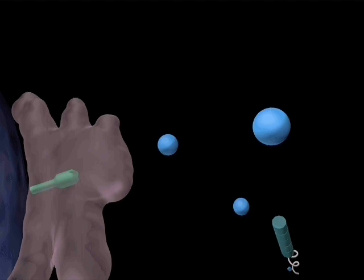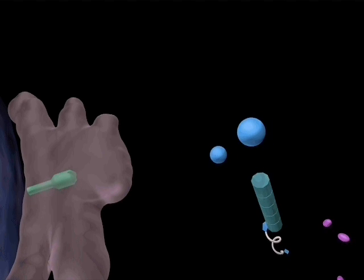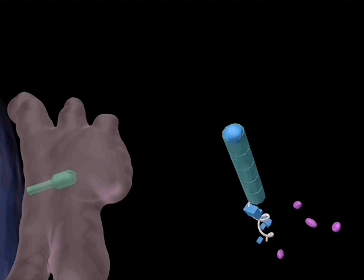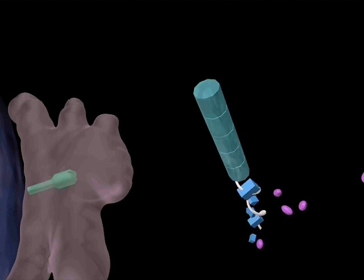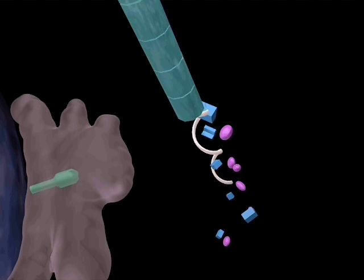Within every tissue cell, proteasomes produce peptide samples from all molecules present in the cell, including the cell's peptides as well as any foreign ones. MHC class I is synthesized by ribosomes on the endoplasmic reticulum.